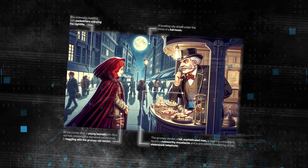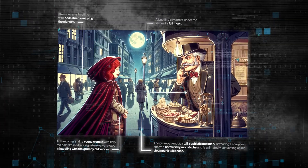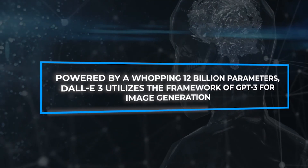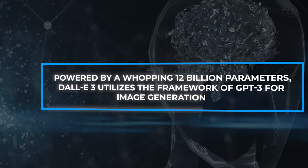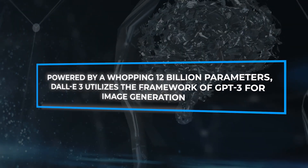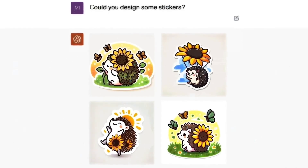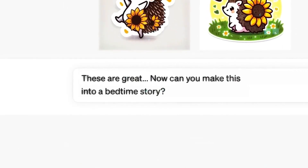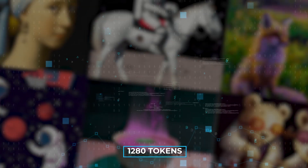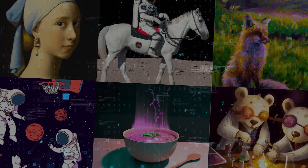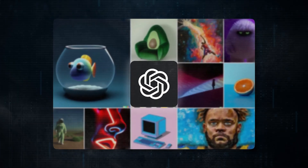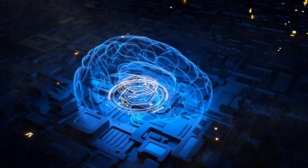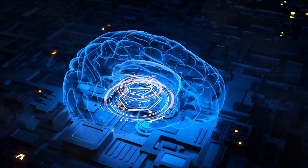The secret sauce behind DALL-E 3's prowess lies in its construction. Powered by a whopping 12 billion parameters, DALL-E 3 utilizes the framework of GPT-3 for image generation. It ingests both text and image as a joint data stream of up to 1,280 tokens. A token can be likened to any symbol from our alphabet, yet for DALL-E 3, these tokens possess the unique ability to embody both text and fragments of imagery.